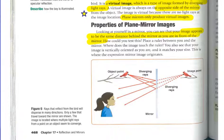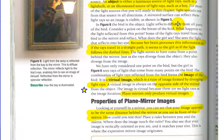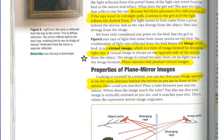So, such as this one down here, seeing the bird. Now, in figure 6, the bird is the object. Light reflects diffusely from all parts of the bird. Consider a point on the breast of the bird. What happens to the light reflected from this point? Some of the light rays travel from the bird to the mirror and reflect. But does the girl see? She sees the light reflected into her eye.